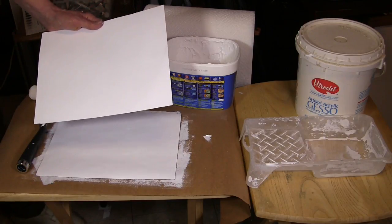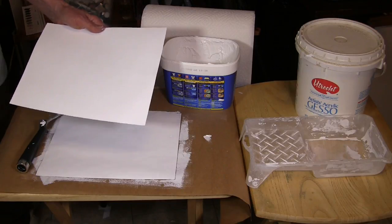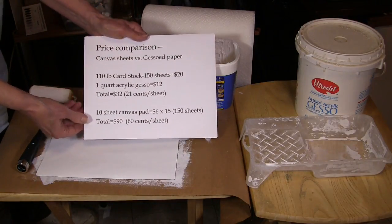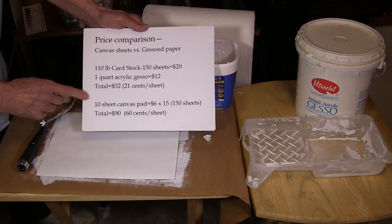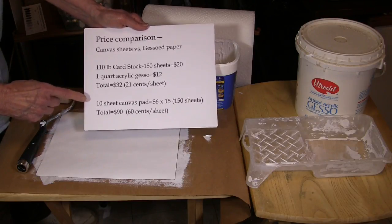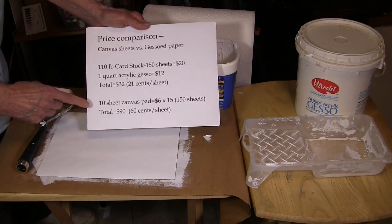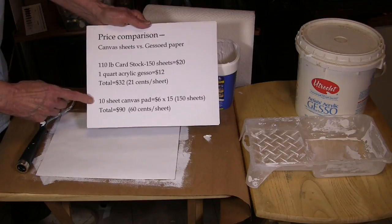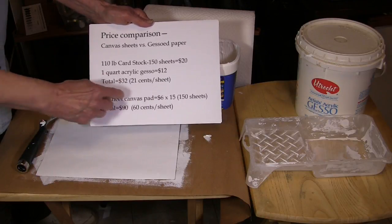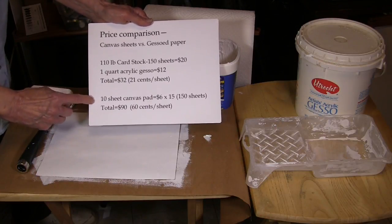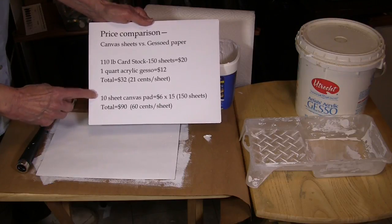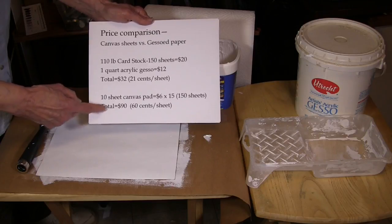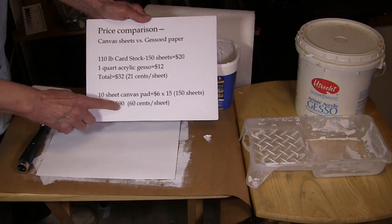There's a little cost analysis I want to show you, and that is a price comparison. The cheapest thing I know of available on the market for doing inexpensive studies are the canvas pads. The canvas pads are 10 sheets in a pad, and if you were to do all of your studies on canvas pads, 150 sheets would cost you about $90.